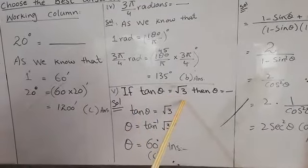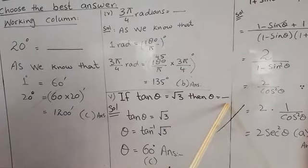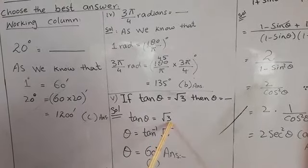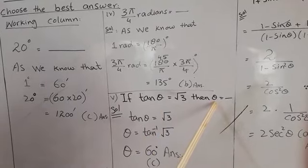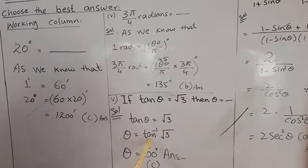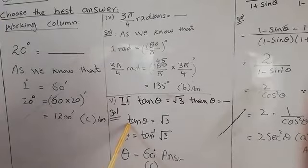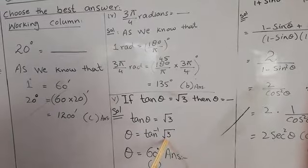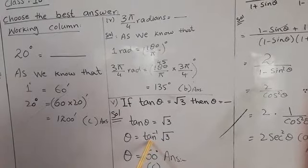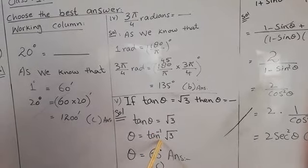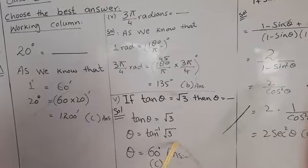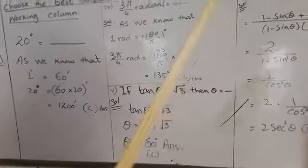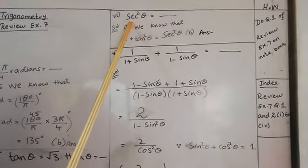Part number 5: if tan θ = √3, what is the value of θ? Write the equation as tan θ = √3. To find θ, take the inverse tangent of both sides — tan⁻¹ cancels tan — and tan⁻¹(√3) using the calculator gives 60 degrees. The right answer is option C: 60 degrees.